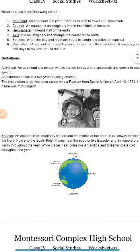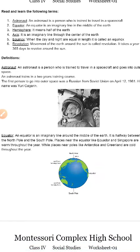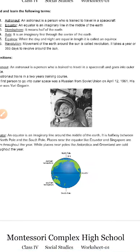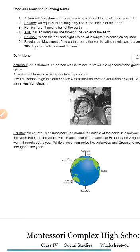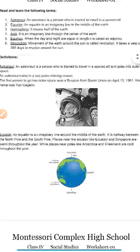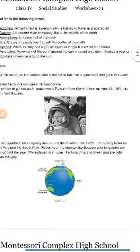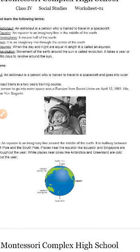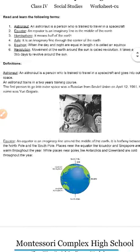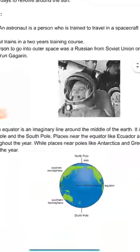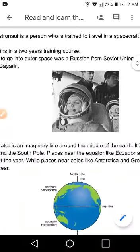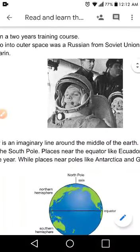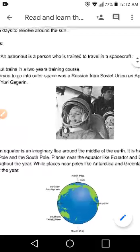The very first person to go into outer space was a Russian from the Soviet Union on April 12th, 1961. His name was Yuri Gagarin. He was from the Russian military. You can see his picture here — he is dressed as an astronaut, sitting in a spacecraft, ready to go.